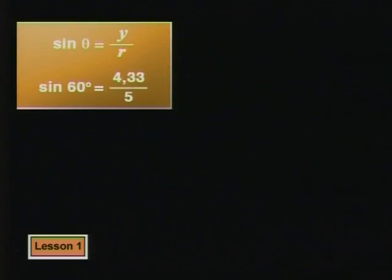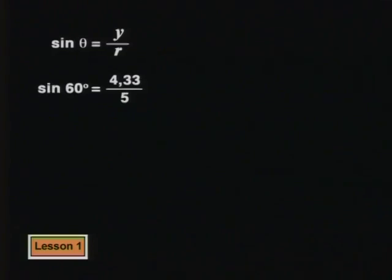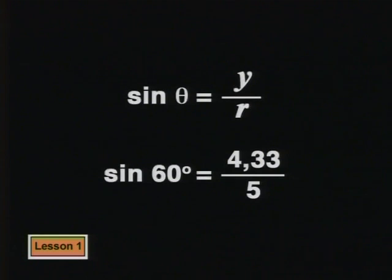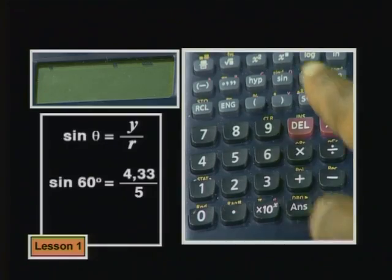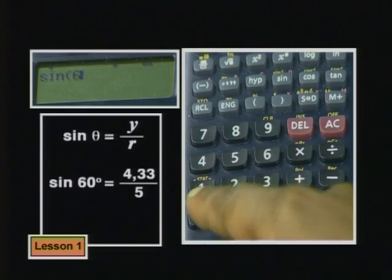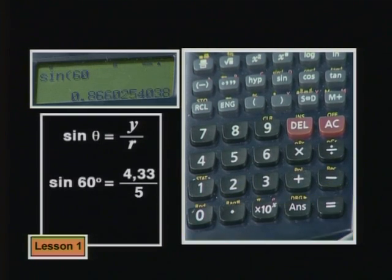So now sine 60 degrees is 4.33 divided by 5. Working that out on a calculator, you get sine 60 degrees is 0.866.